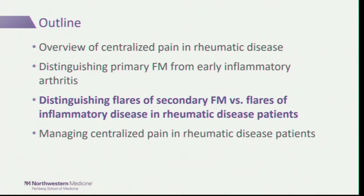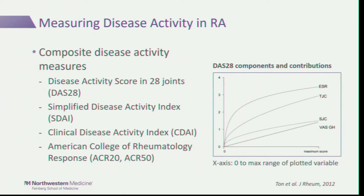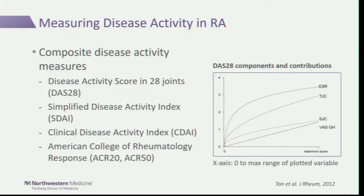Now, for a patient you know has RA, how do you distinguish whether their pain is due to RA versus a centralized process like a fibromyalgia flare? To address that I need to explain how disease activity is measured in rheumatoid arthritis. Rheumatologists use composite disease activity measures such as the DAS28, the Simplified Disease Activity Index, and the Clinical Disease Activity Index, which combine different components through addition or multiplication to produce a score.